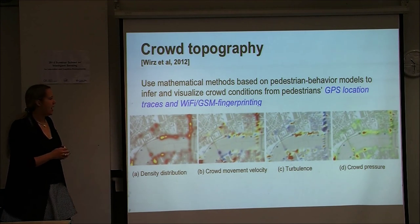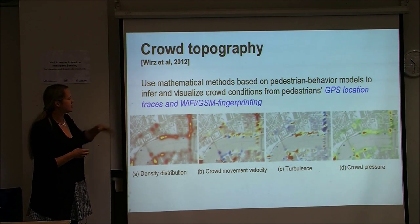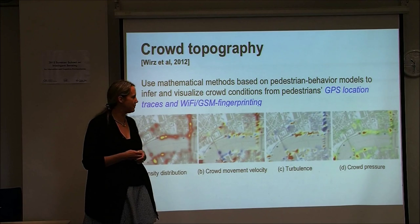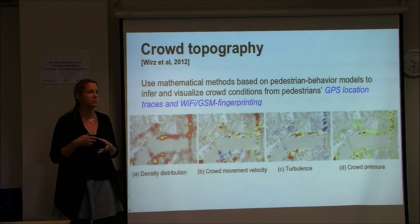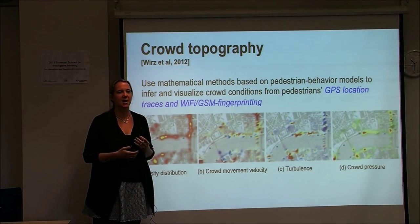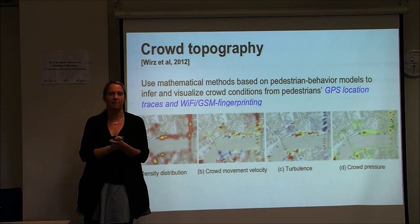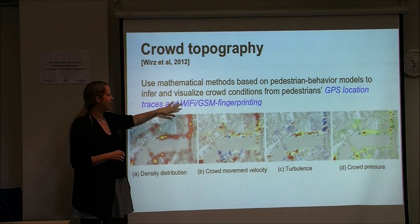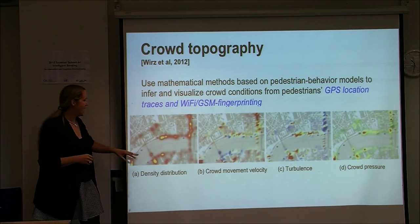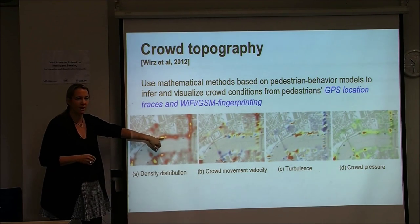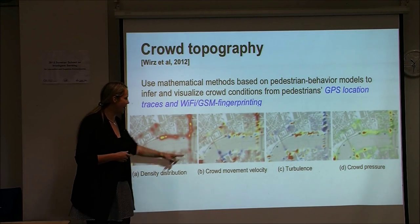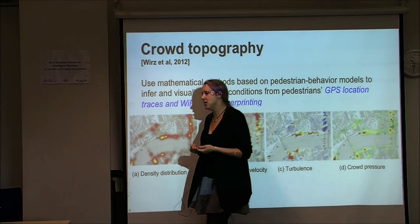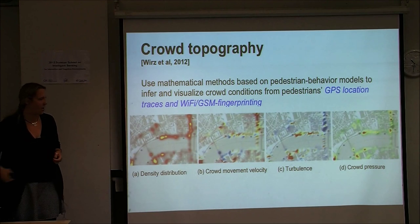More recently, a study on crowd topography used GPS traces and Wi-Fi fingerprinting. Done in London in collaboration with City Police during the Lord Mayor's Parade, it provided police with real-time information about crowd behavior. Heat maps showed density distribution, crowd movement velocity, turbulence, and crowd pressure, allowing identification of potential problem hotspots.